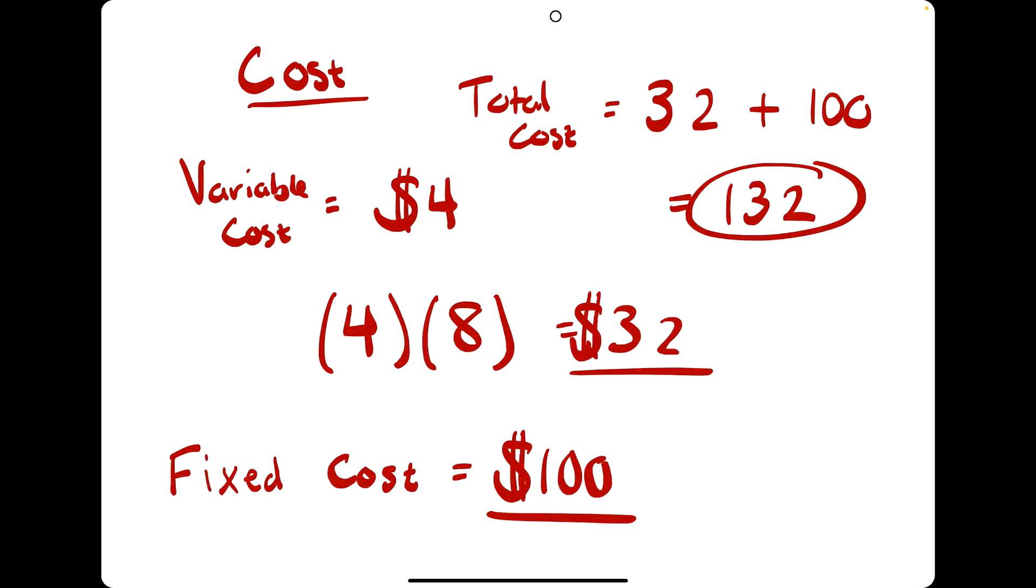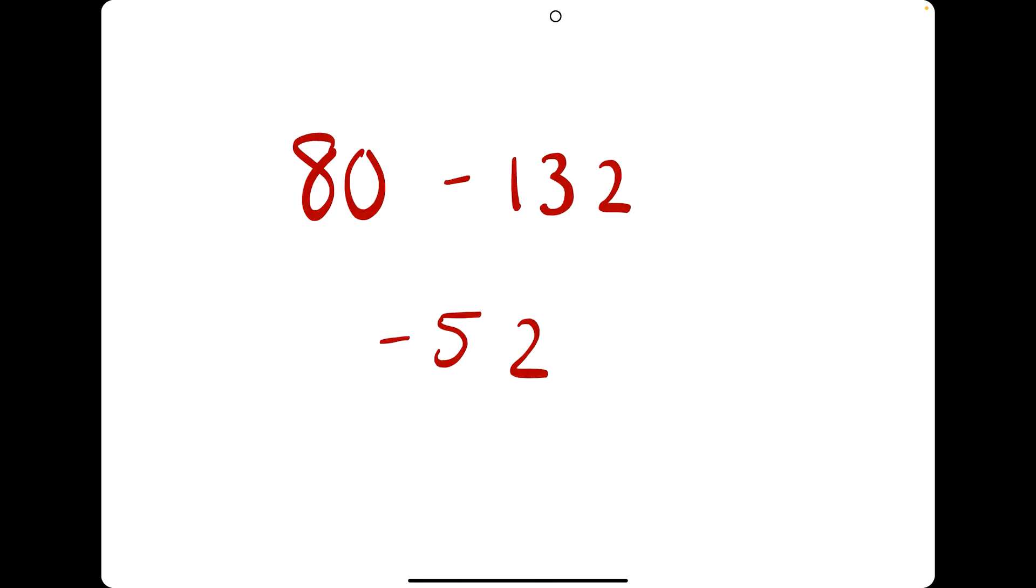So if you only made $80, but it costs you $132 to make $80, how much did you really make or lose? That's right. 80 minus 132 is negative 52. This week you lost $52 making some mugs.